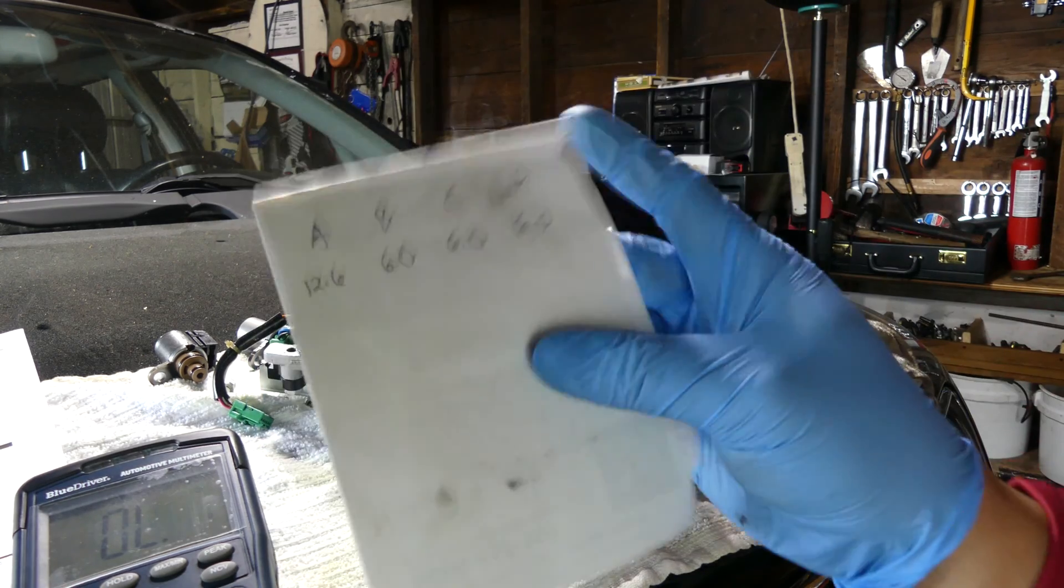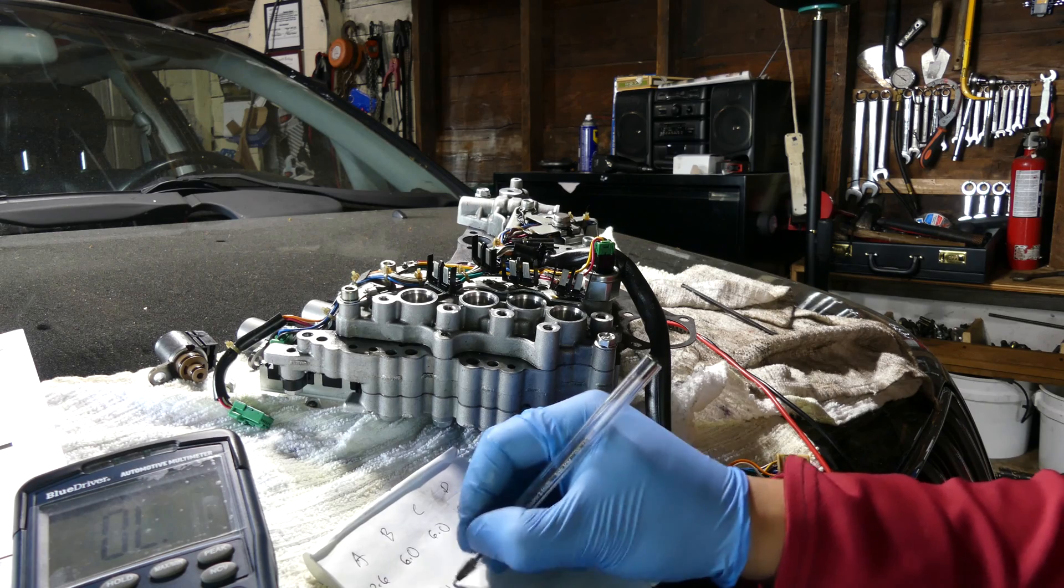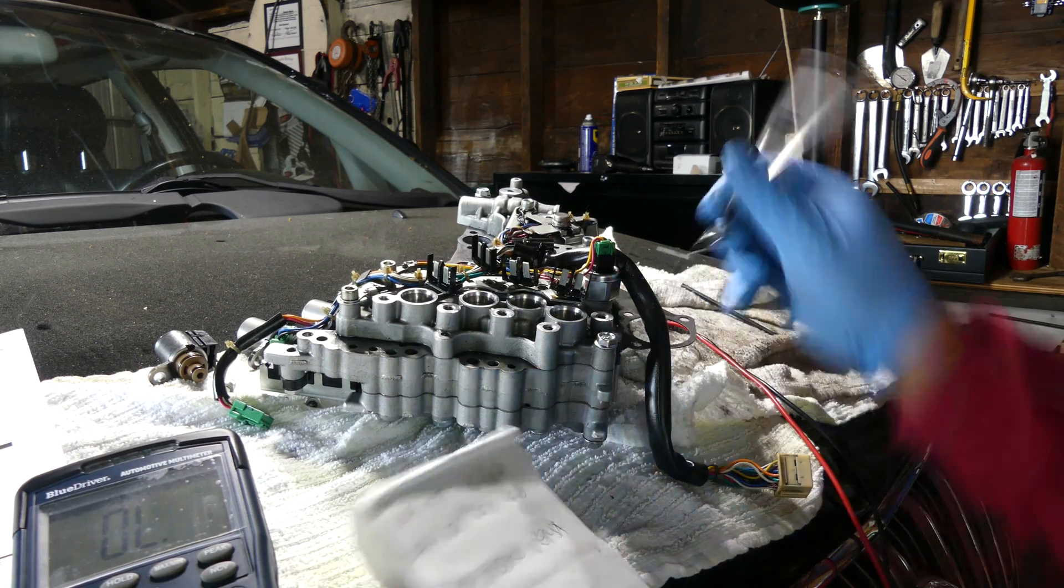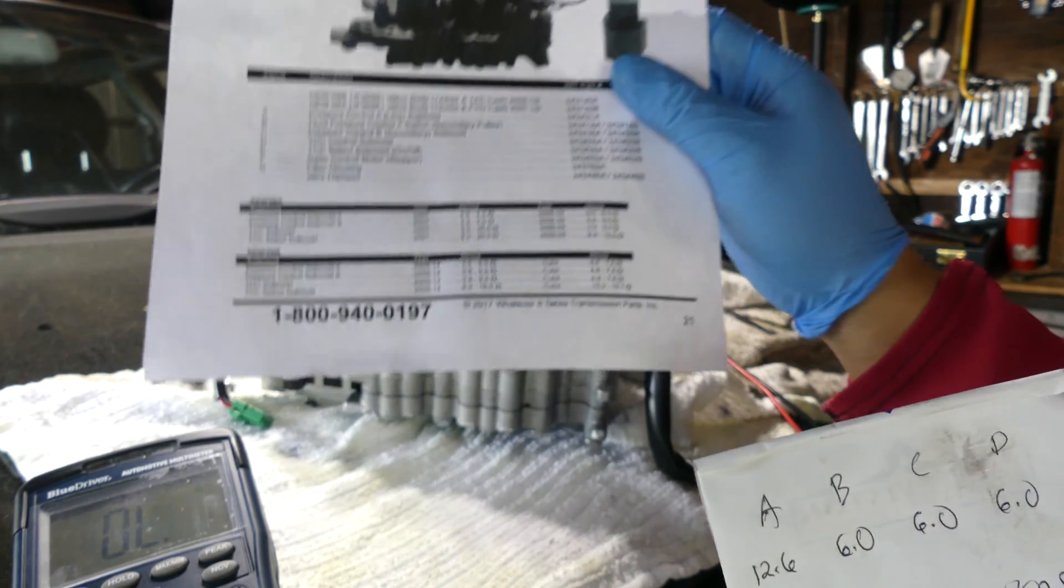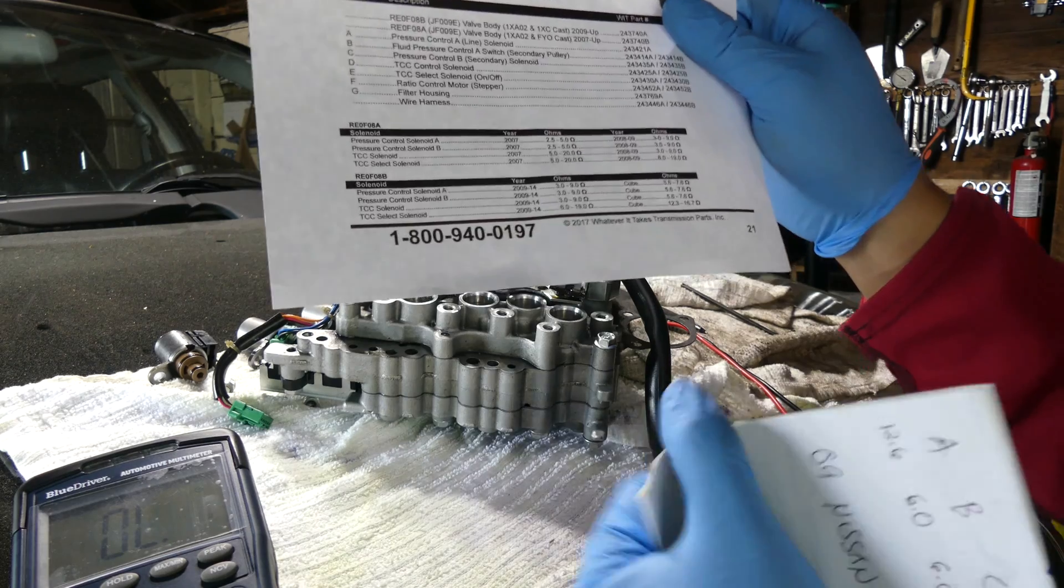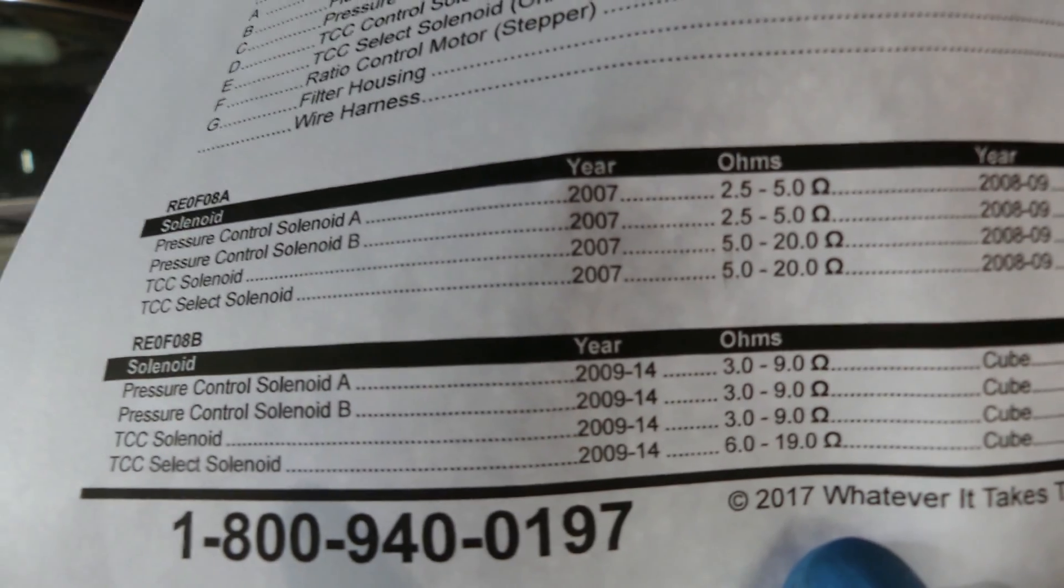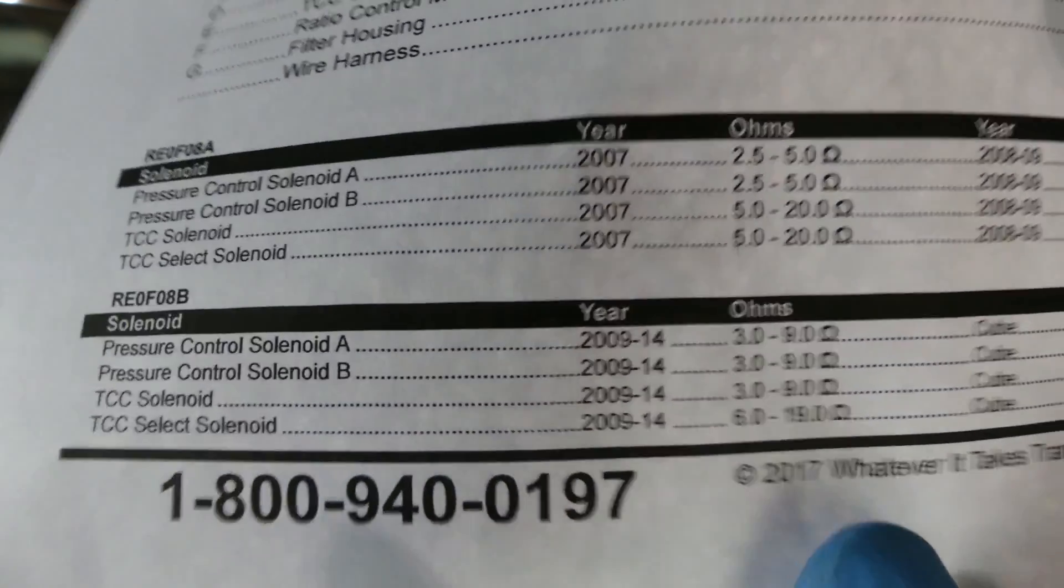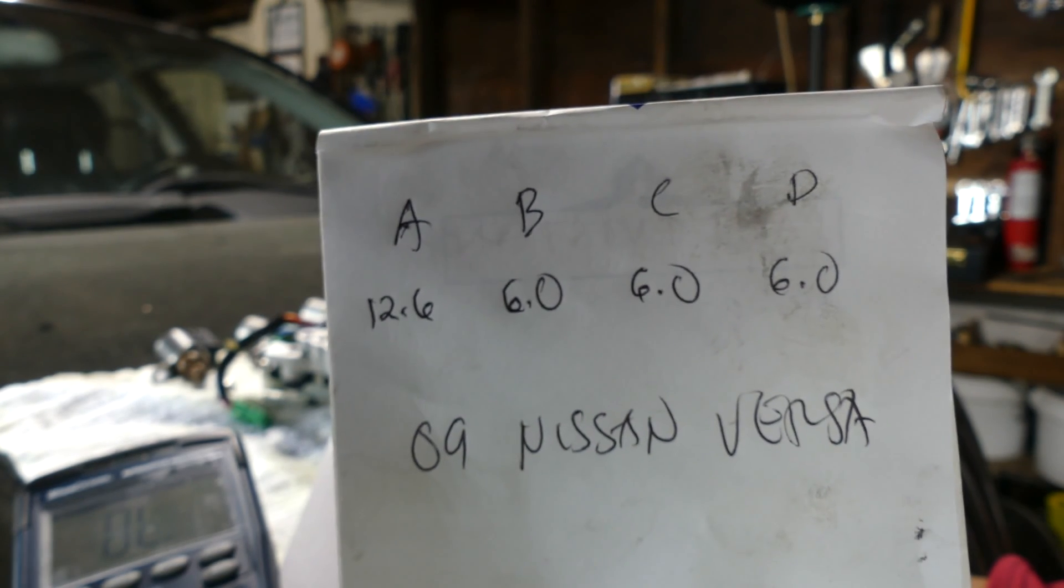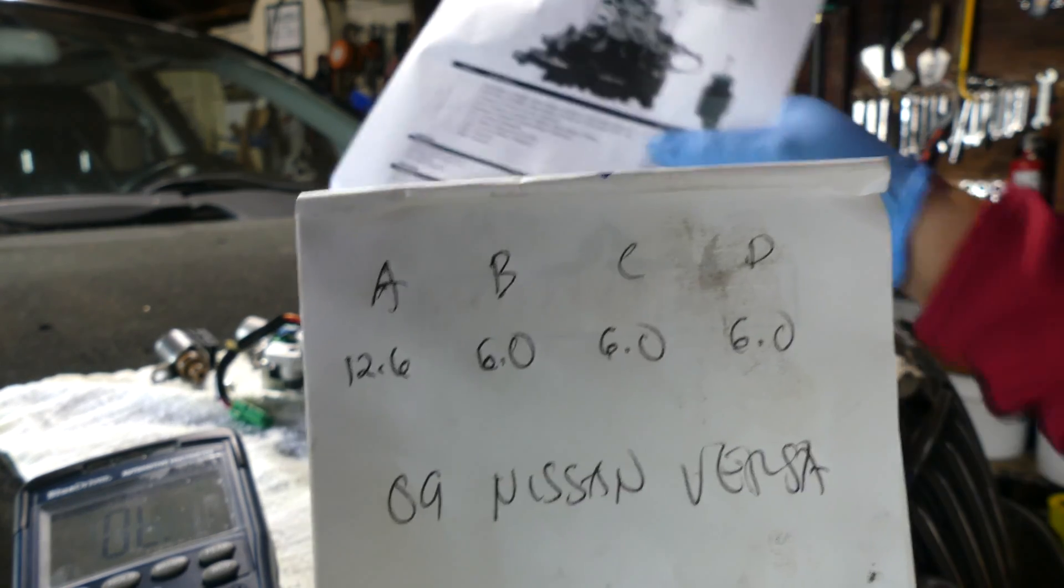Now after we gather all the resistance of the solenoid, and this is 09 Nissan Versa, so this is an 09 Nissan Versa. So I got manual for the resistance or the specification for 2009 Nissan Versa and over here, as you can see. So the first one, A, it should be between 3 ohms to 9 ohms. And we got here 12.6, so the resistance is too high. So there's something wrong with the solenoid A.